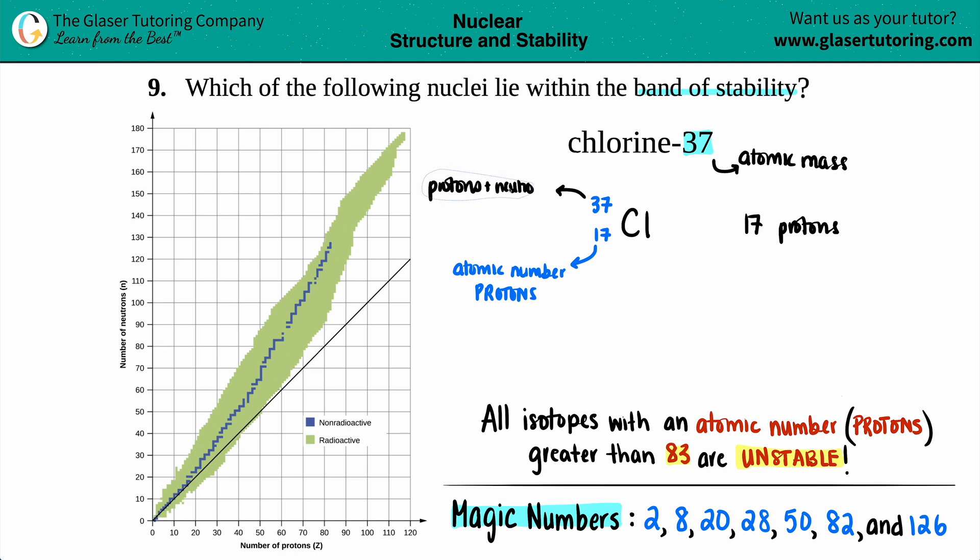All you have to do is subtract the two numbers. If I take 37 and minus it from 17, I will get 20. So we got 17 protons and we got 20 neutrons.